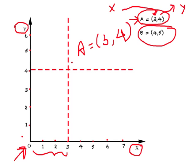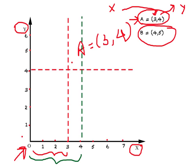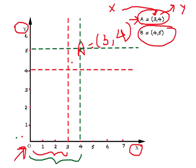Suppose you are given another point — let's call it B — and B is (4, 5). We already know x will be 4 and y will be 5. So we go four spaces on the x-axis and draw a vertical line from there. Then we go five spaces on the vertical axis and draw a horizontal line from there. Wherever these two lines meet, you have point B at (4, 5).